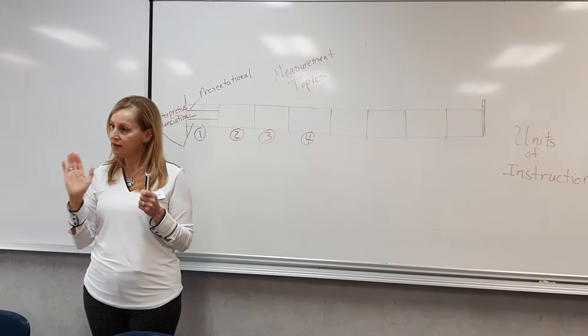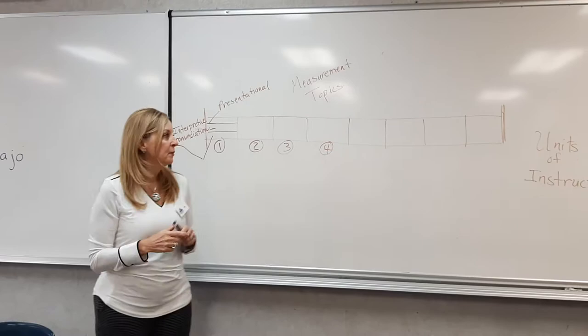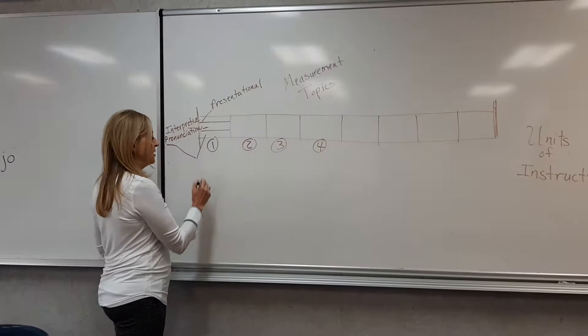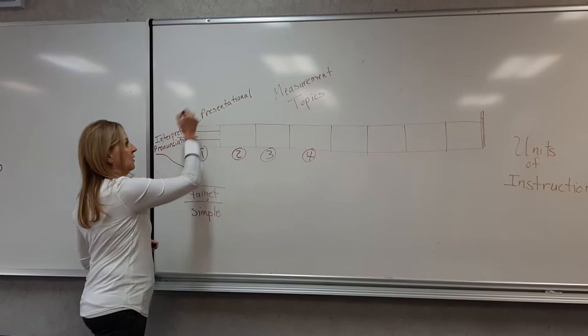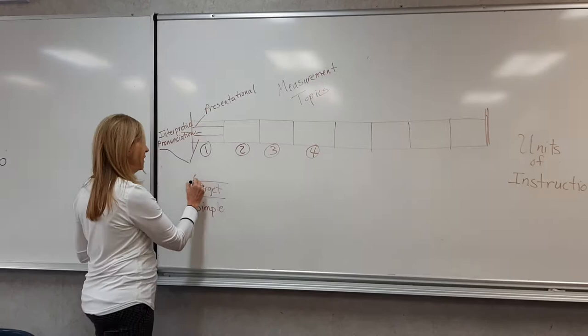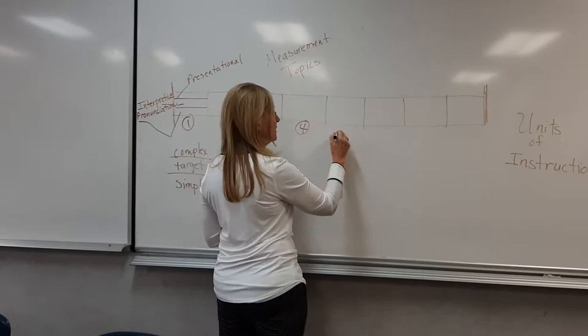Then what I would do is I would build a progression of knowledge — a proficiency scale for each one of these topics. So by the end of this topic, by the time I finish teaching that topic, here's what kids will be able to do. And here's my complex. You build a scale for each one of these. You might have six of these, which would result in six proficiency scales.